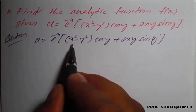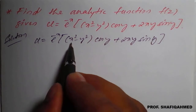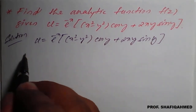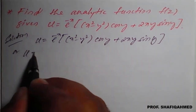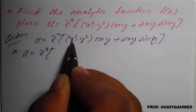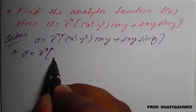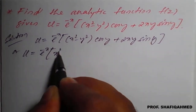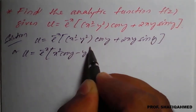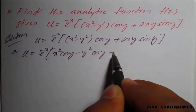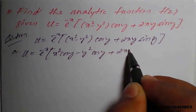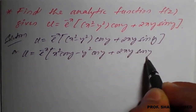Here I need to go for a partial derivative. So I will expand this bracket: u = e^(−x) · [x² cos y − y² cos y + 2xy sin y].